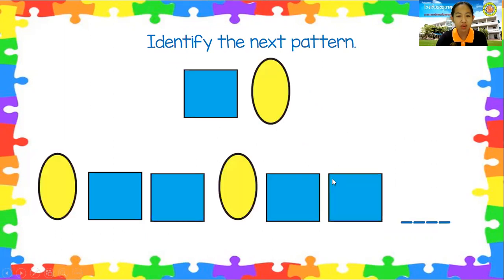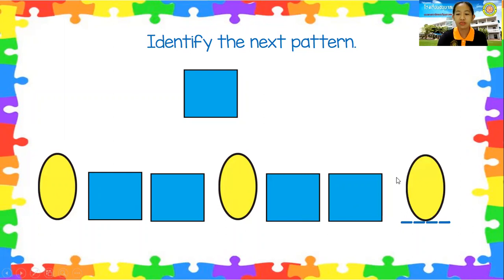How about this? Oval, square, square, oval, square, square. What is the next pattern? Oval — very good, that is correct.